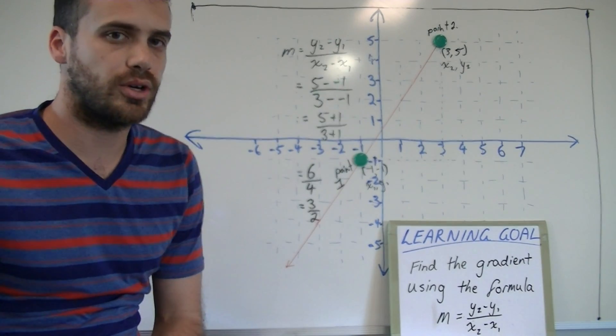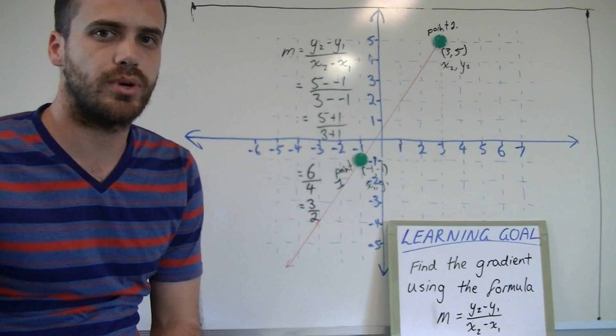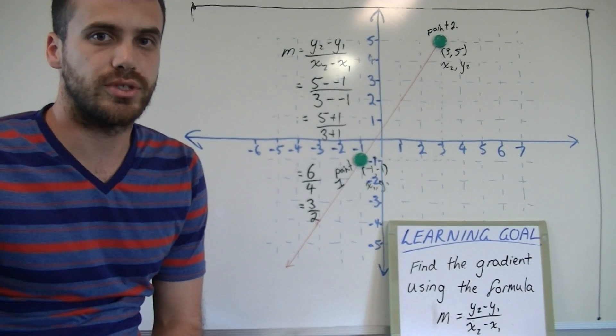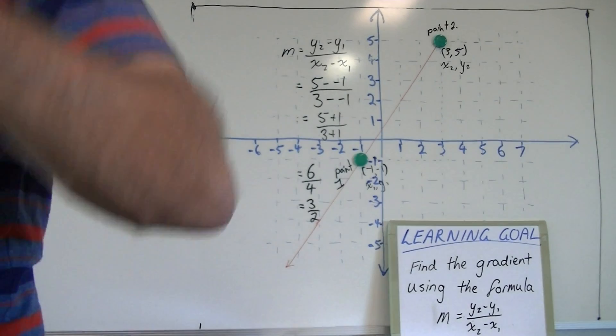So the gradient for this line using the formula y2 minus y1 over x2 minus x1 is 3 over 2. You should be able to manage that. Thank you.